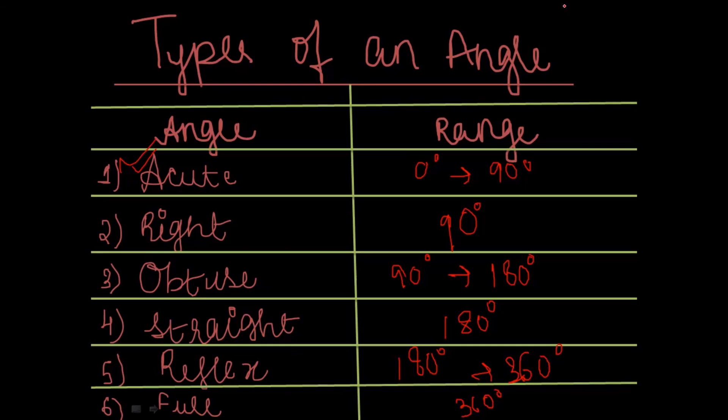Here we can see a pattern: first it is 0 to 90, then exactly 90, then 90 to 180, then exactly 180, then 180 to 360, then exactly 360. I think this makes it so much more easier.